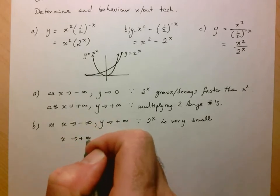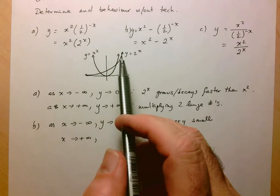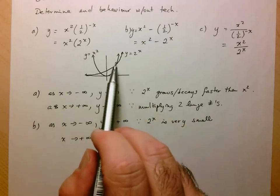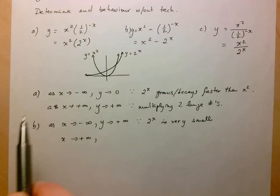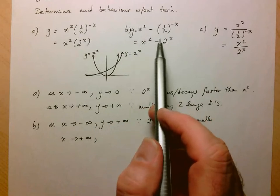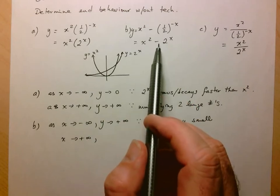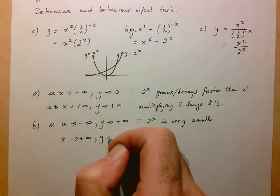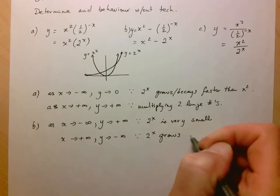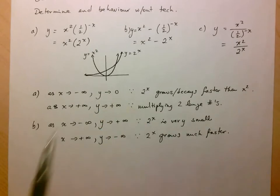As x goes to positive infinity, I've got x squared becoming very large, and I'm subtracting 2 to the x, which is getting larger even faster. Eventually 2 to the x is going to start taking over and grow faster. Despite the fact that x squared is getting very large, 2 to the x is getting bigger even quicker and will take over. When I subtract a big number minus a much, much bigger number, y approaches negative infinity, since 2 to the x grows much faster — I'm subtracting an even bigger number than x squared produces.